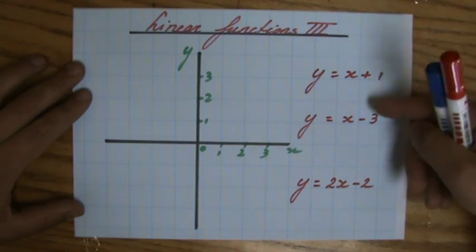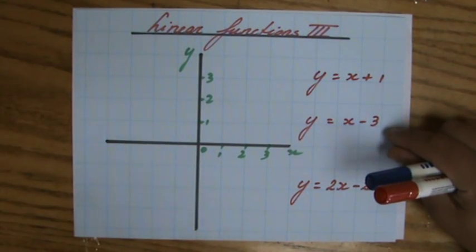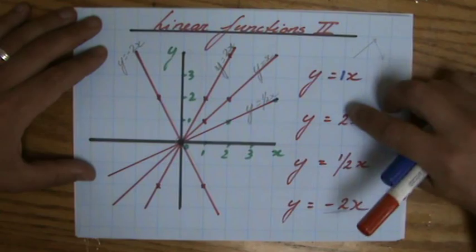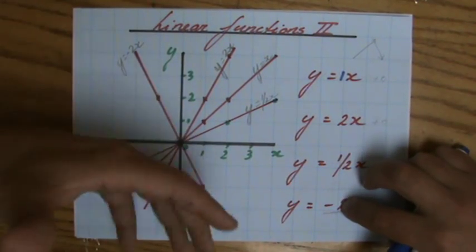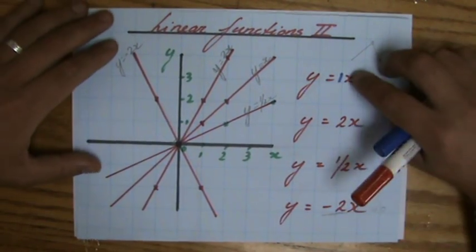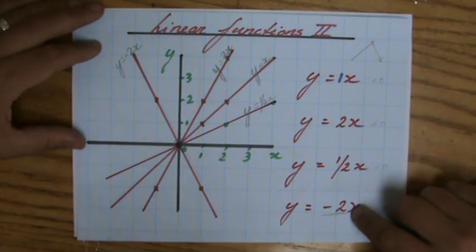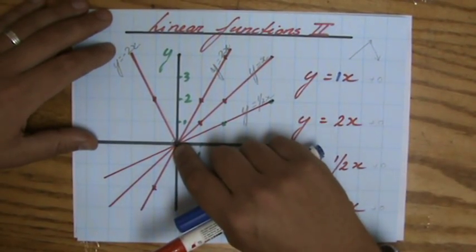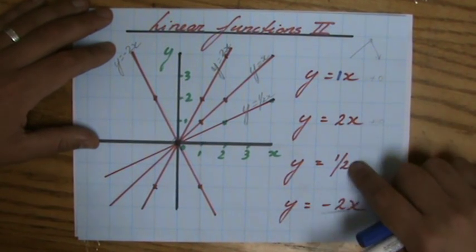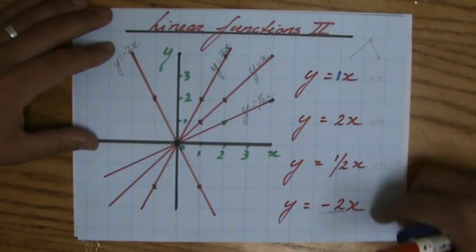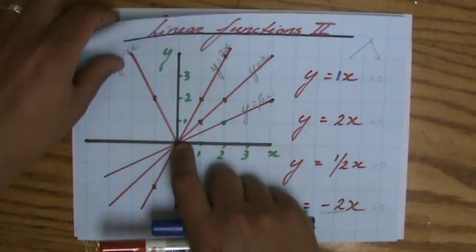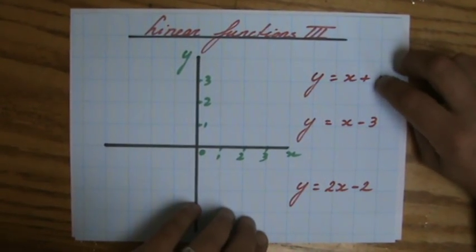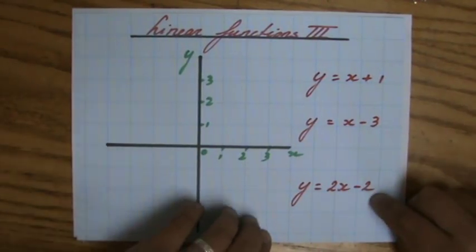We're going to graph three linear functions. In my previous video we graphed four linear functions and noticed that the number in front of x does something with the steepness of my line — it defines the steepness of the line — where a negative number in front of x makes the line go down. All those lines went through the origin because it only said x, 2x, half x, and minus 2x — it was plus zero. And now I promised to look at three functions where it says plus one, or minus three, or minus two.